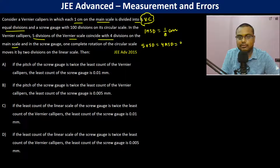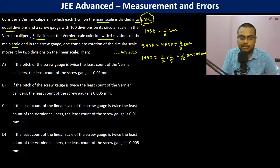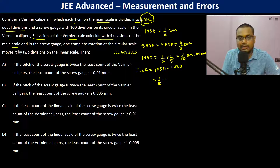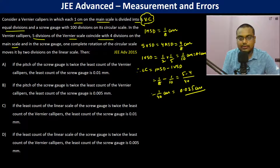4 MSD equals 4/8 centimeter, so one vernier scale division is (1/2) × (1/5) = 1/10 centimeter = 0.1 centimeter. Therefore the least count is one main scale division minus one vernier scale division: 1/8 minus 1/10 = 5/40 minus 4/40 = 1/40 centimeter = 0.025 centimeter.